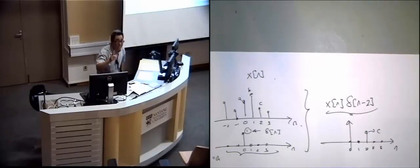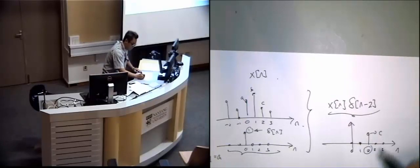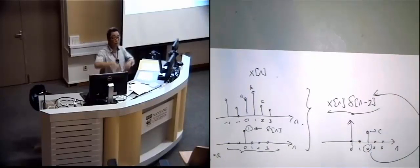This is not C. It is a function that has all zeros except at point 2. Okay? We value C.